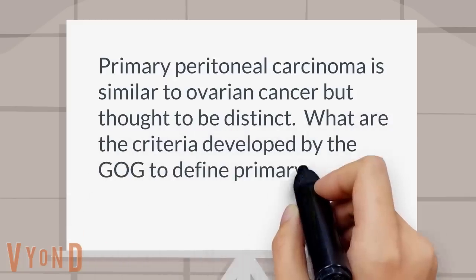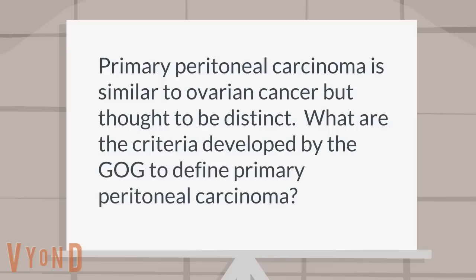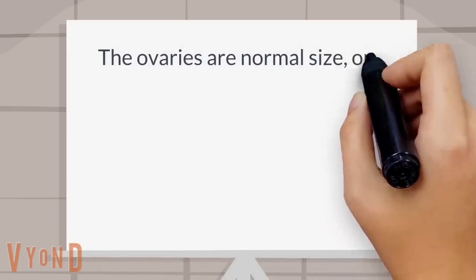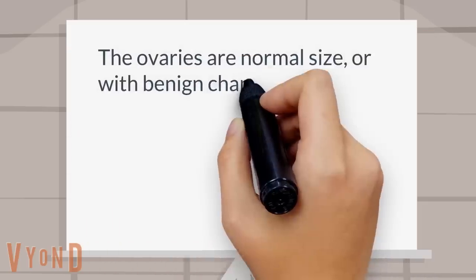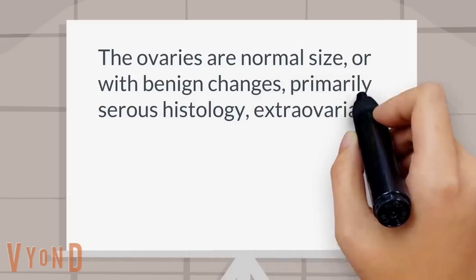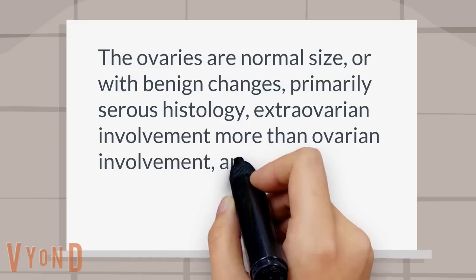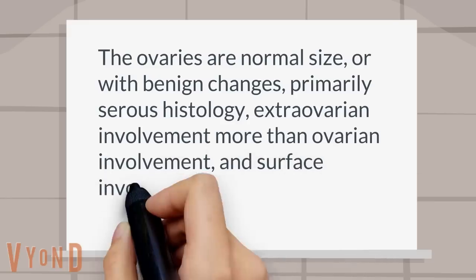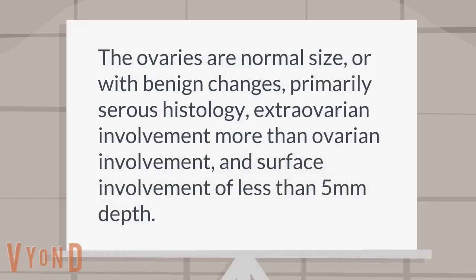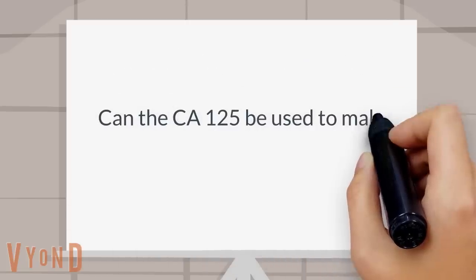What are the criteria developed by the GOG to define primary peritoneal carcinoma? The ovaries are normal size or with benign changes, primarily serous histology, extra-ovarian involvement more than ovarian involvement, and surface involvement of less than five millimeters depth.